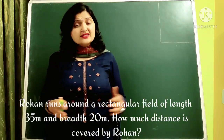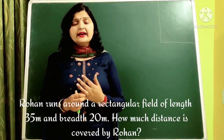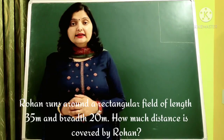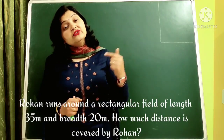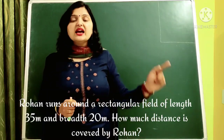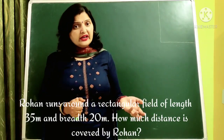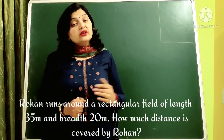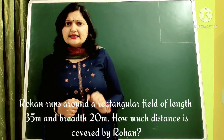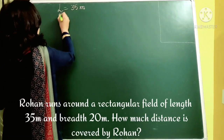Now look at this question: Rohan is running around a rectangular field. If someone is running around a figure, it means we are talking about the boundary of the figure — and when we talk about the boundary, we are talking about the perimeter. So we have to calculate the perimeter of the field, which equals the distance covered by Rohan. The length given is 35 meters and breadth is 20 meters.